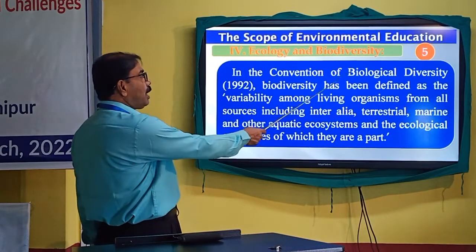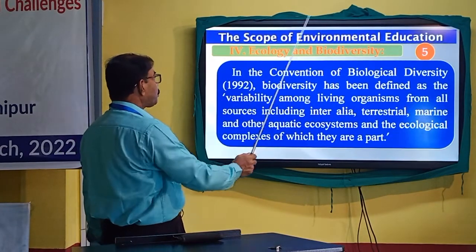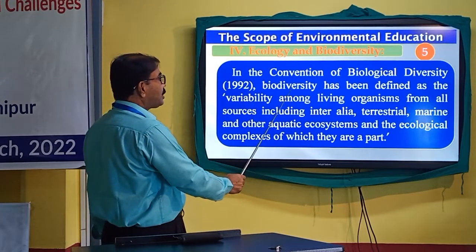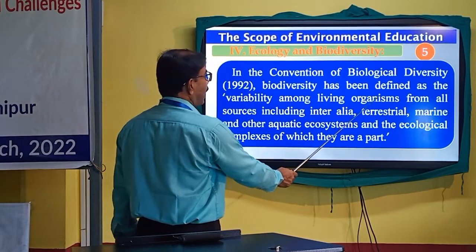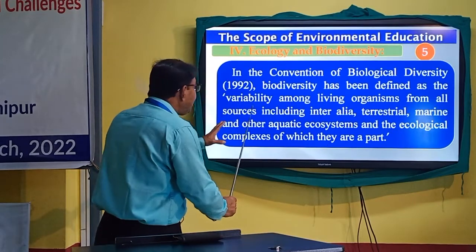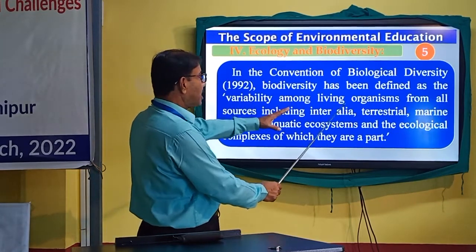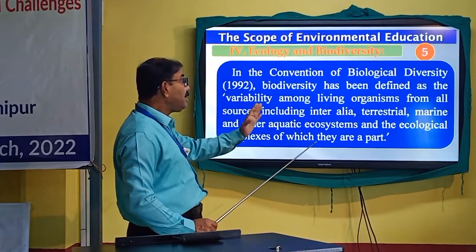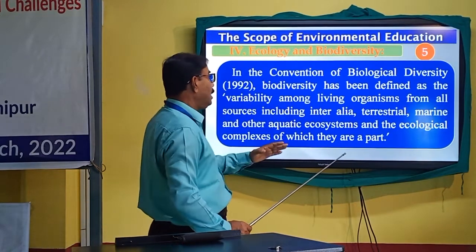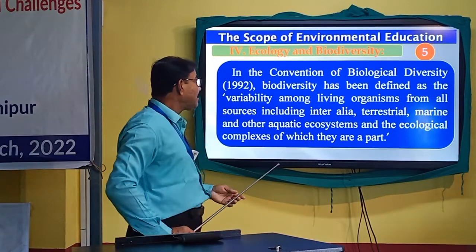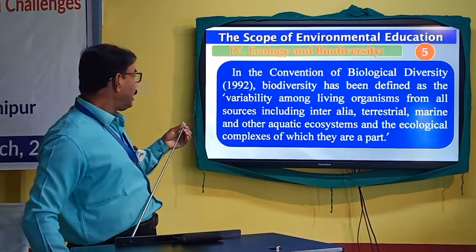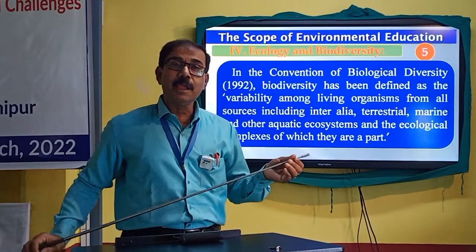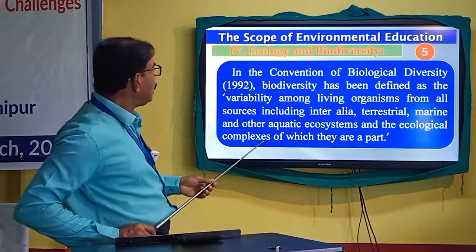In the Convention of Biological Diversity, 1992, biodiversity has been defined as the variability among living organisms from all sources, including inter alia terrestrial, marine and other aquatic ecosystems and ecological complexes of which they are a part.